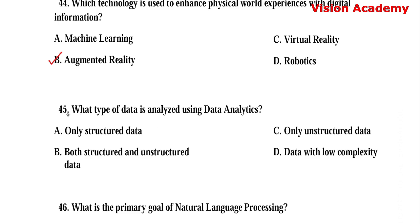Question number 45. What type of data is analyzed using data analytics? Option A: Only structured data. Option B: Both structured and unstructured data. Option C: Only unstructured data. Option D: Data with low complexity. Here, option B, both structured and unstructured data, can be analyzed.